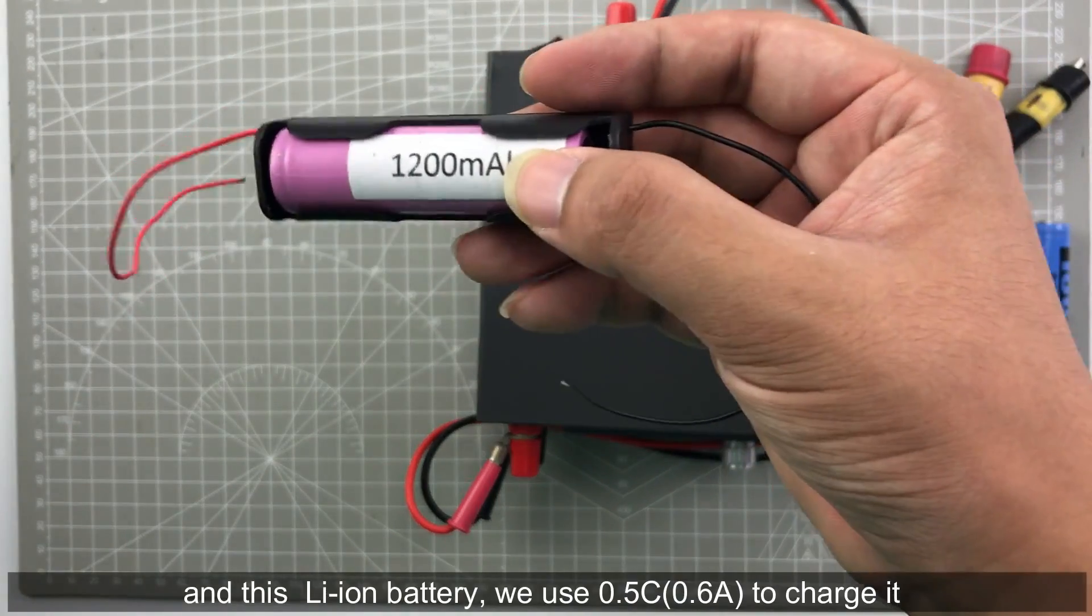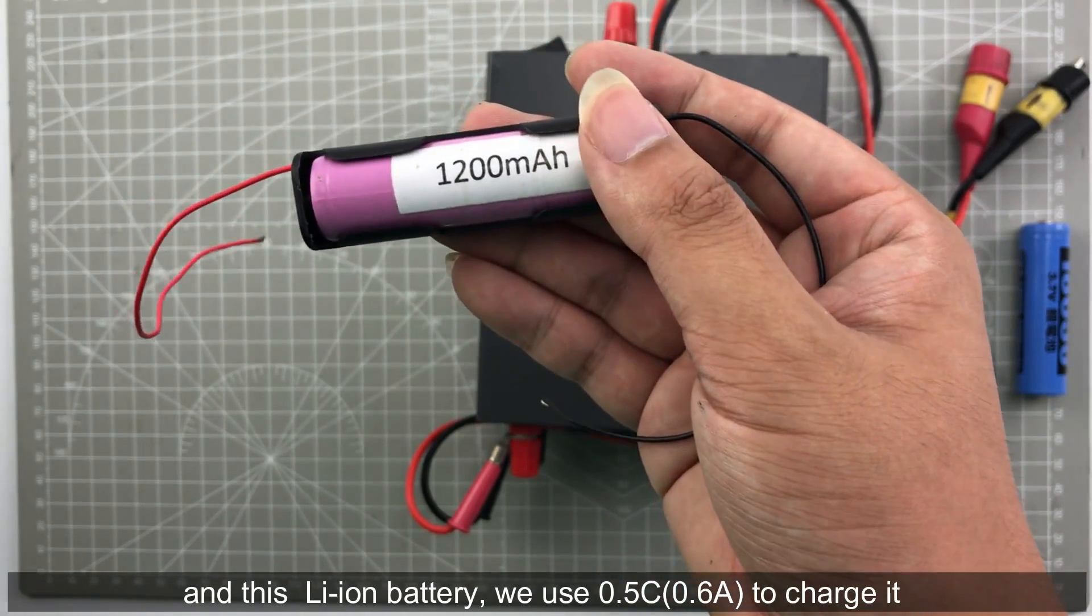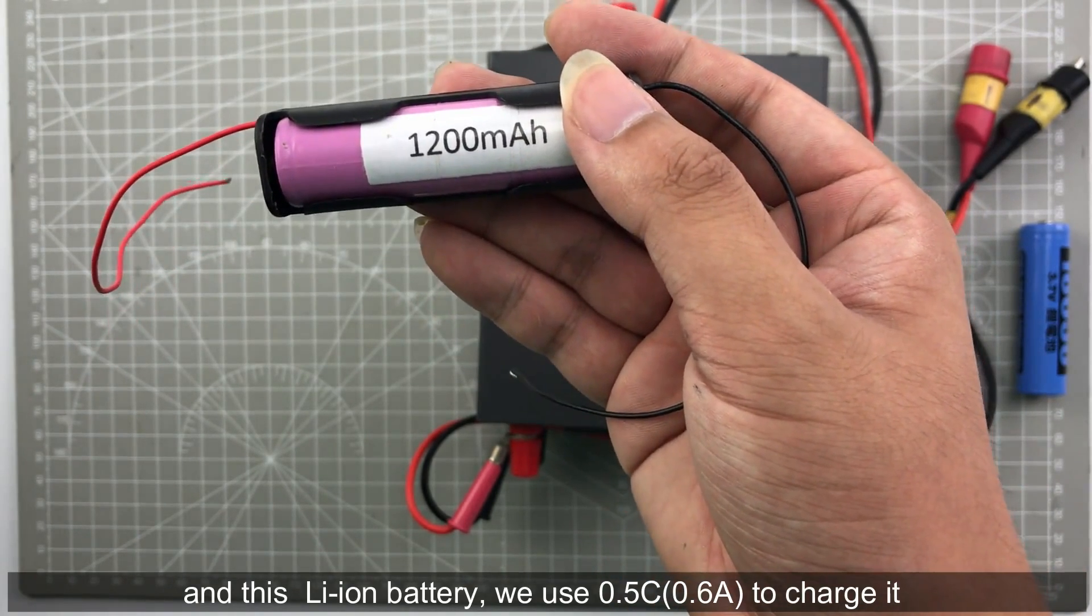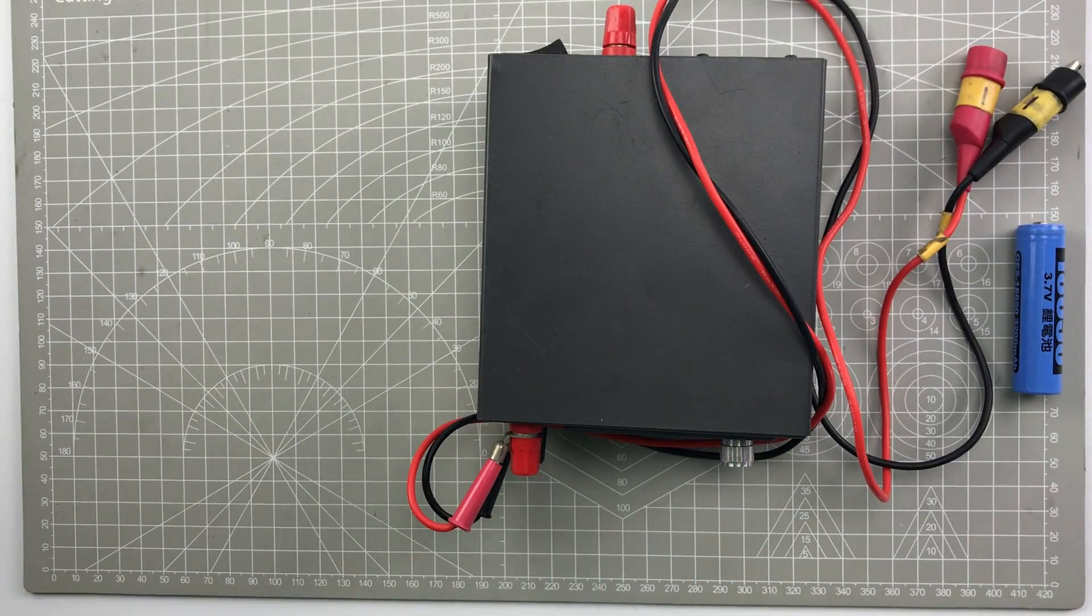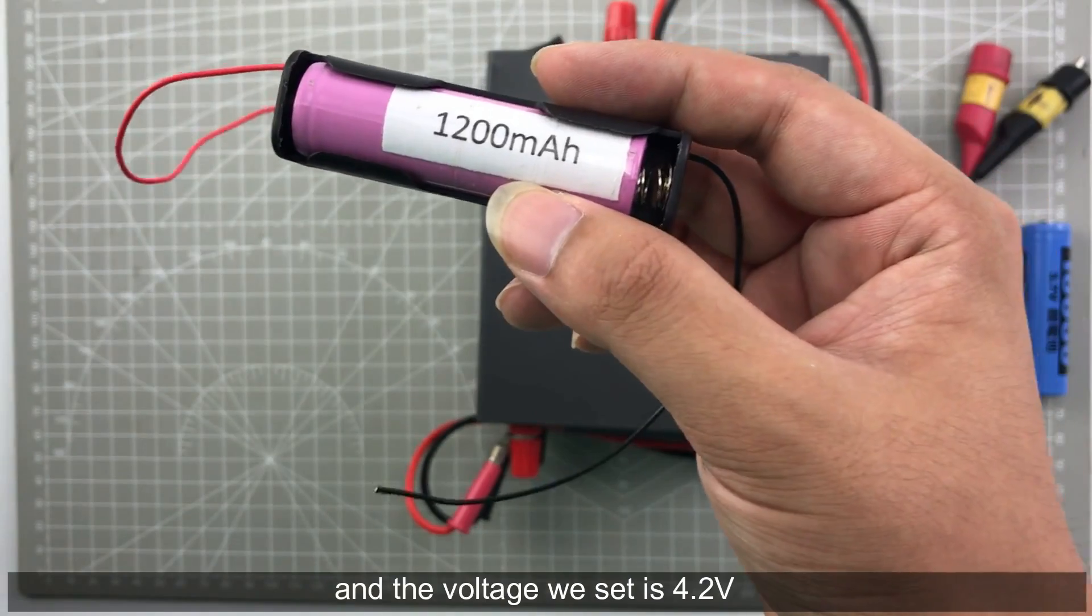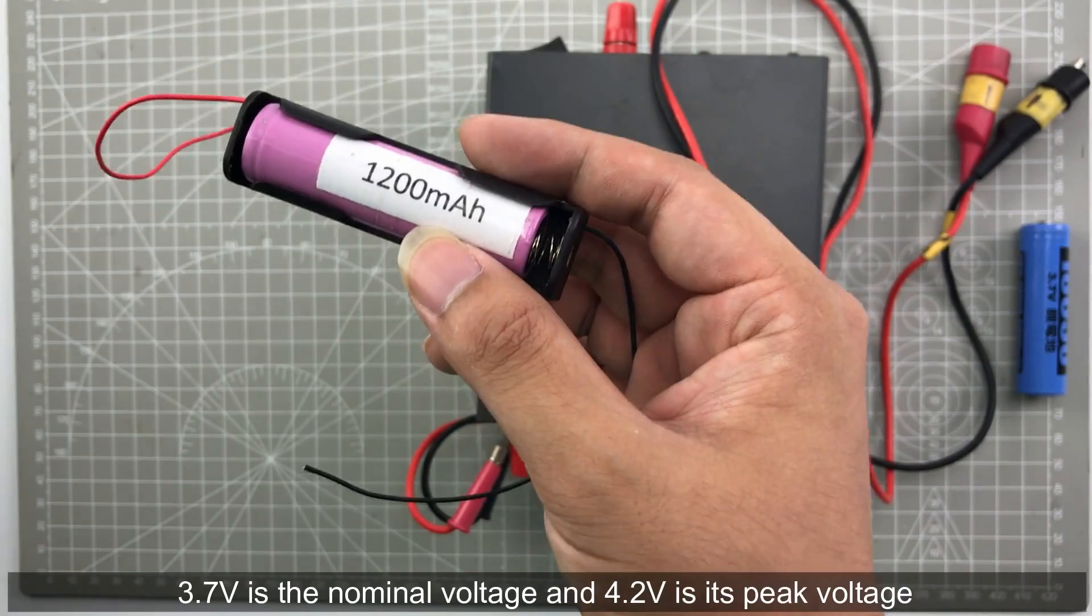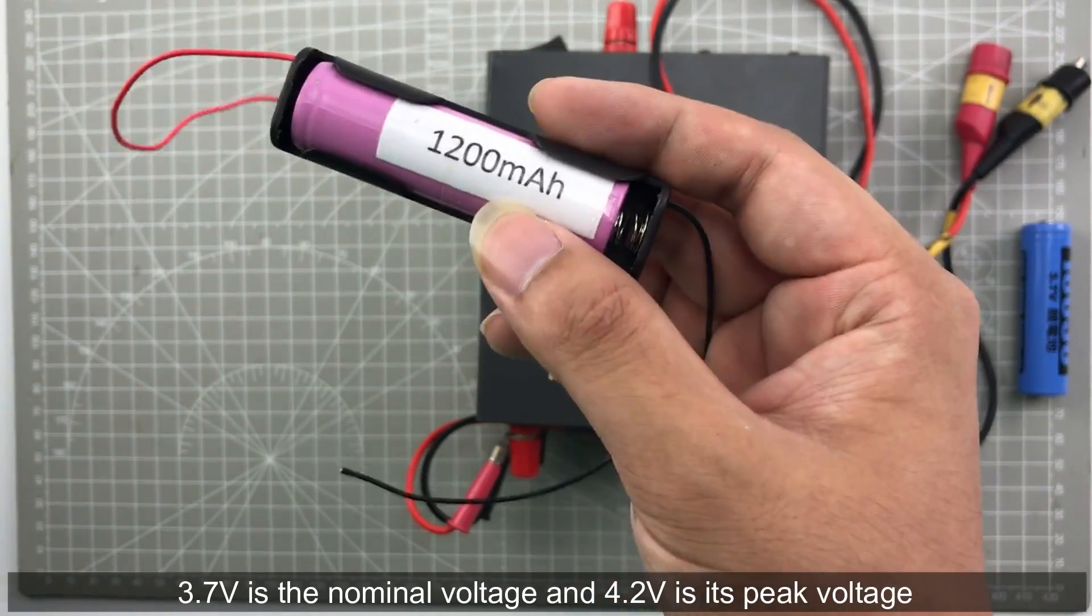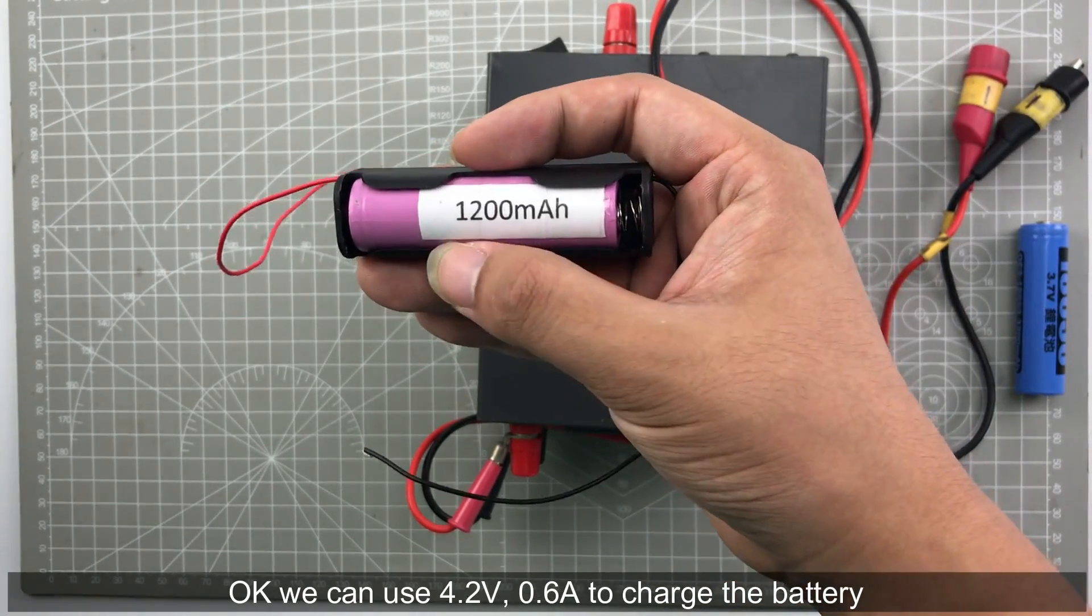We use half C to charge this lithium battery so the current is 0.6 ampere. And the voltage we set is 4.2 volt. 3.7 volt is the nominal voltage and 4.2 volt is the peak voltage. We can use 4.2 volt.